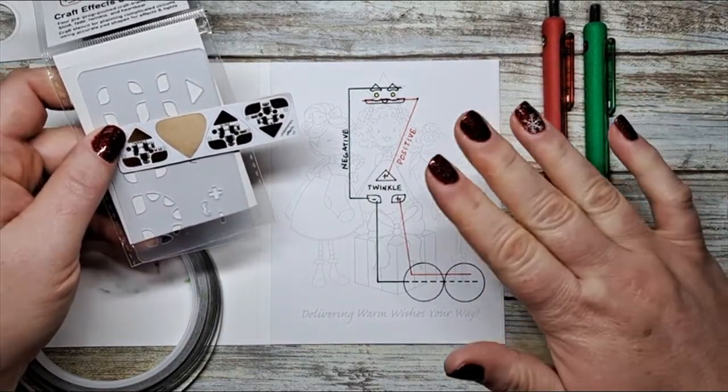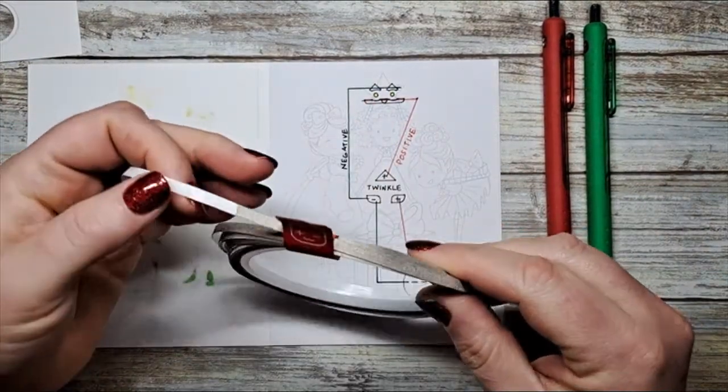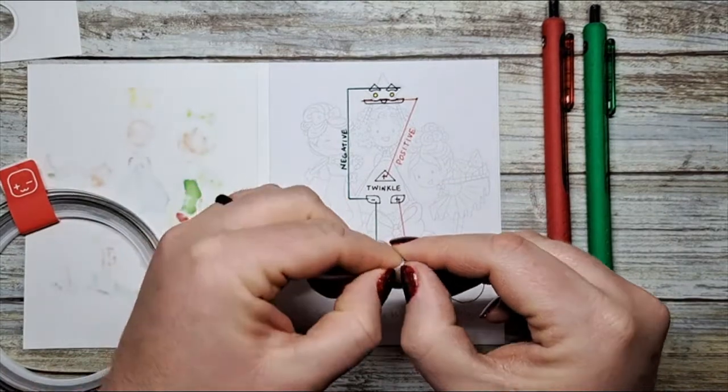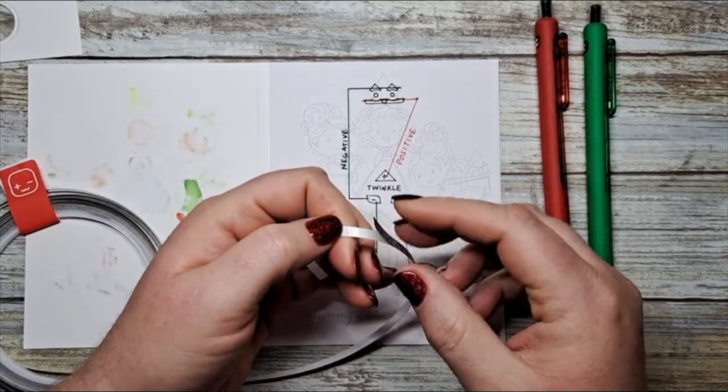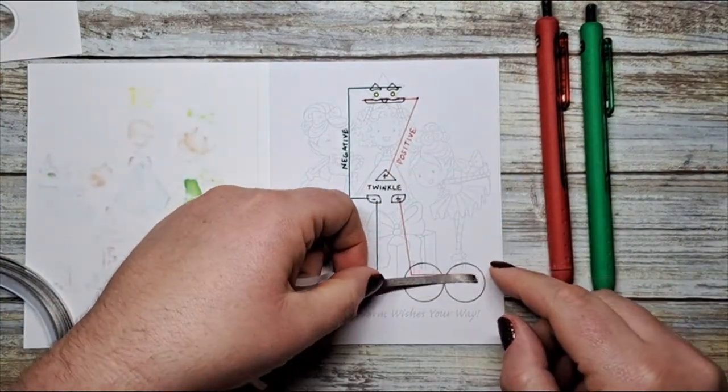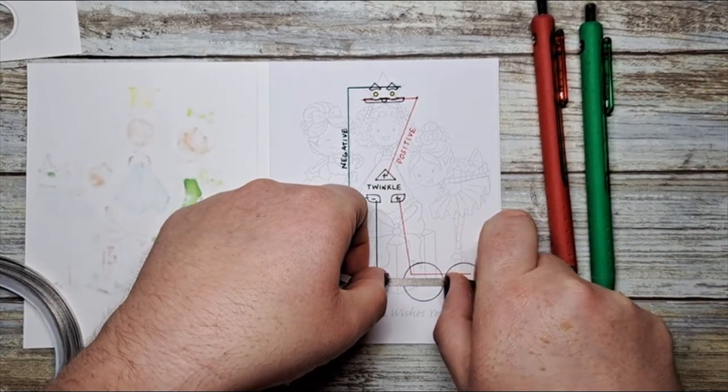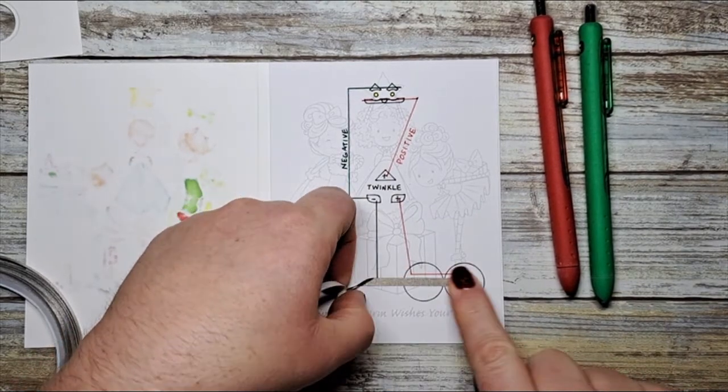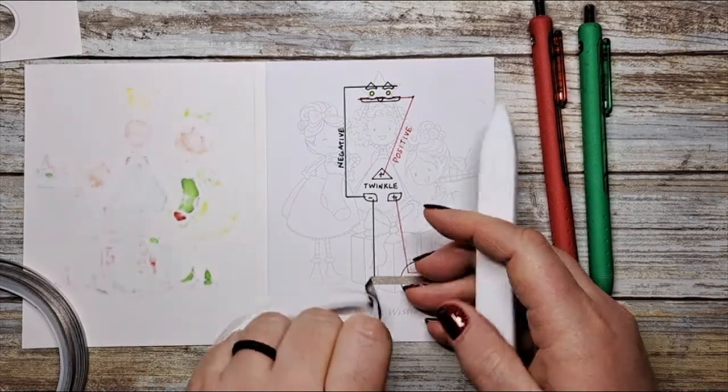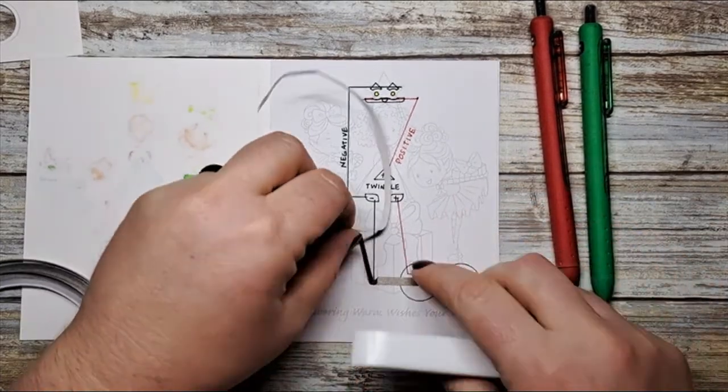Now we can take our fabric adhesive tape and this is conductive and it's as easy as pulling it out and peeling it off your backer paper. Let's add this to our circuit. I always start with the negative side of my circuit and the reasoning behind that is so that it can be placed underneath the batteries because the negative terminal is on the bottom of the battery and the positive is on the top of the battery, so therefore I always start my circuit by putting my negative down first.